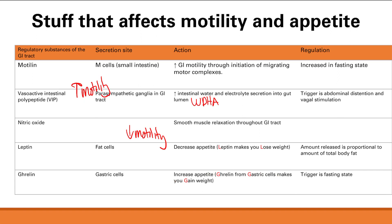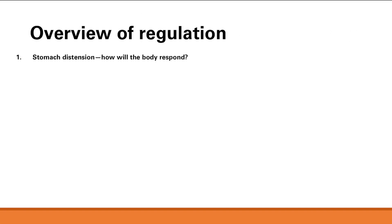Now let's review how these regulatory substances respond to specific triggers. With stomach distension, the body wants to increase digestion and move food through the GI tract. It does that by increasing motility in the stomach through gastrin and in the intestine through VIP, respectively.